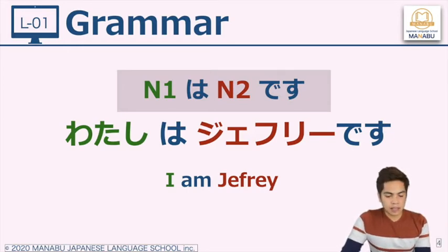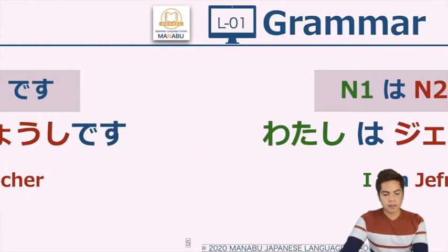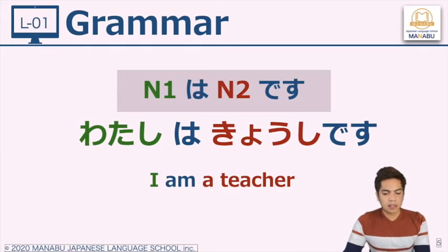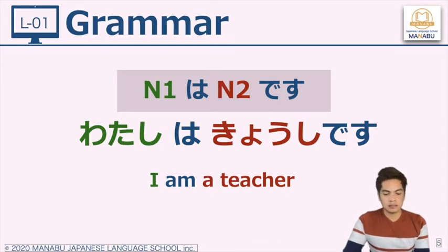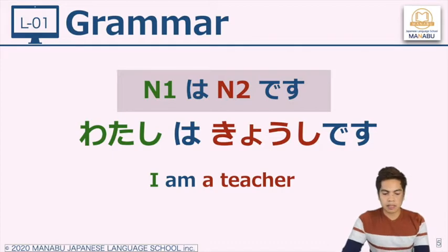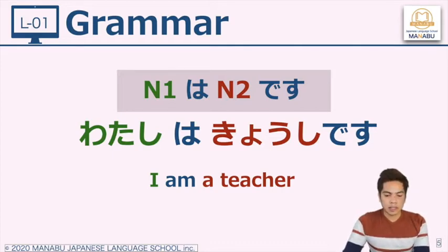Let's look at another example: Watashi wa kyoshi desu. Watashi in English is I or me. I will describe myself as a teacher. So watashi wa kyoshi desu — about me, watashi, that watashi is a kyoshi.